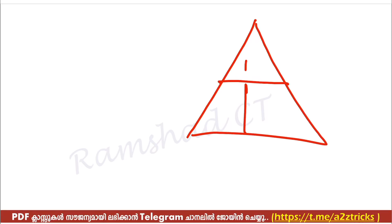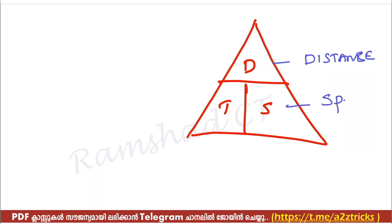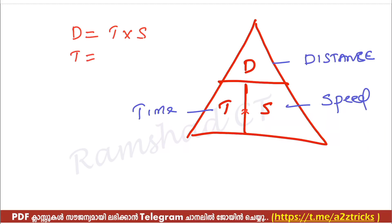The formula is D, T, S: D is distance, S is speed, T is time. D is equal to T into S. Time is D divided by S. Speed is distance divided by time. So: D = T × S, T = D / S, S = D / T.